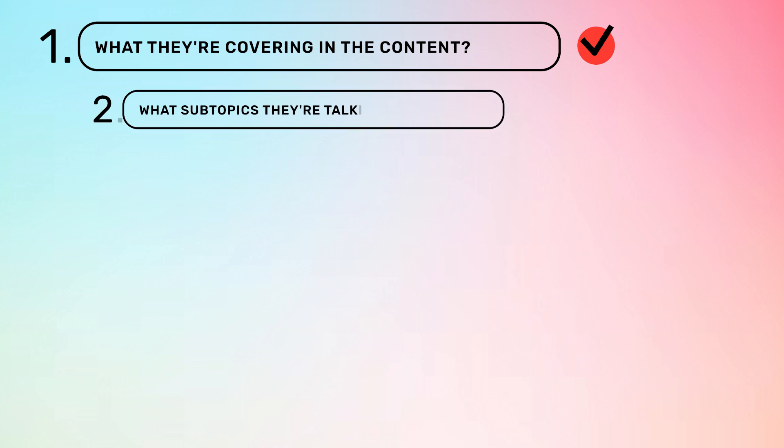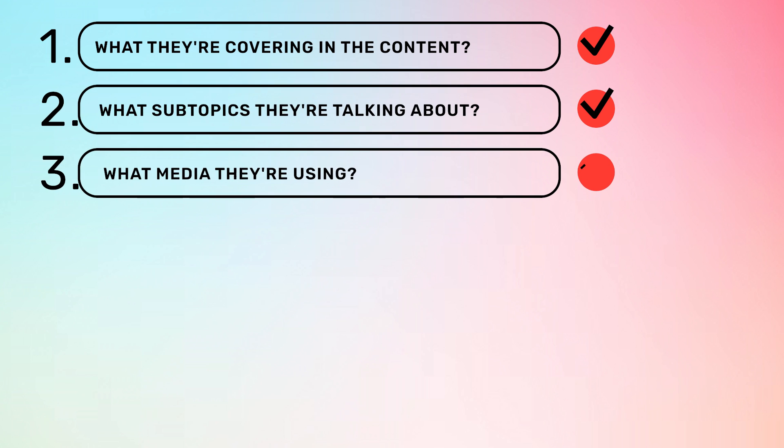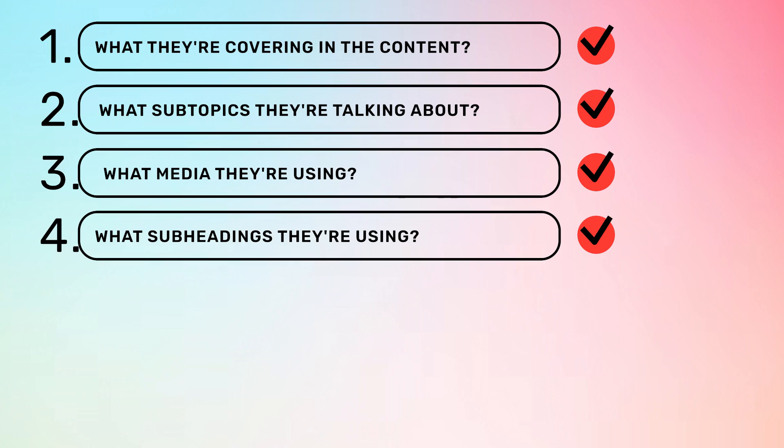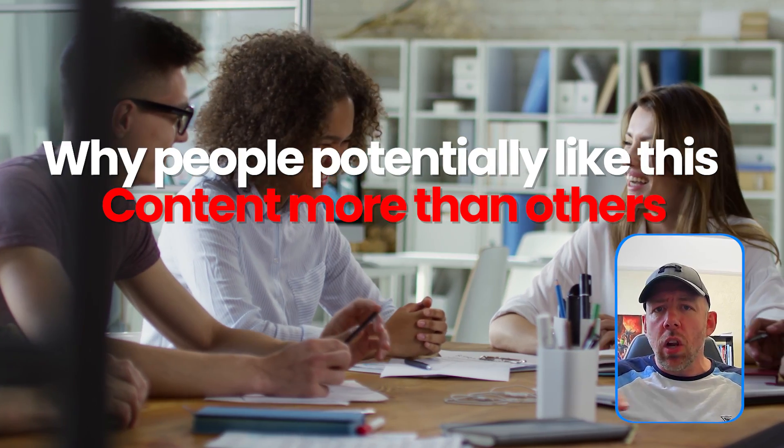For cluster pages, it's all about quality. A good reference is Google — look at who is already ranking around your topic and subtopics, and look at what they're covering in the content, what subtopics they're talking about, what media they're using, what subheadings and layout and design they're using. Think about why people potentially like this content more than others. Then ask yourself honestly: is my content better than what's already ranking? If it's not, go away and make it better. You really want to make sure you're better than what's already ranking on page one of Google.